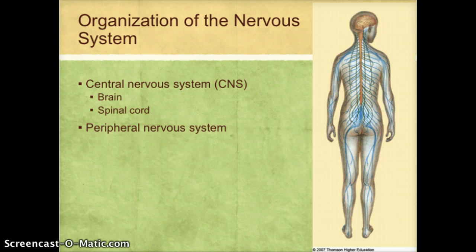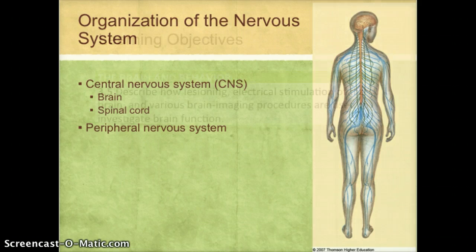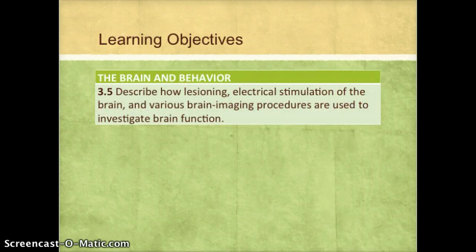We'll get more into the peripheral nervous system later. Right now, we want to focus in on the brain. Before we talk about the brain, we need to look at how we study the functioning of the brain. So we're going to be looking at Learning Objective 3.5: The Brain and Behavior.